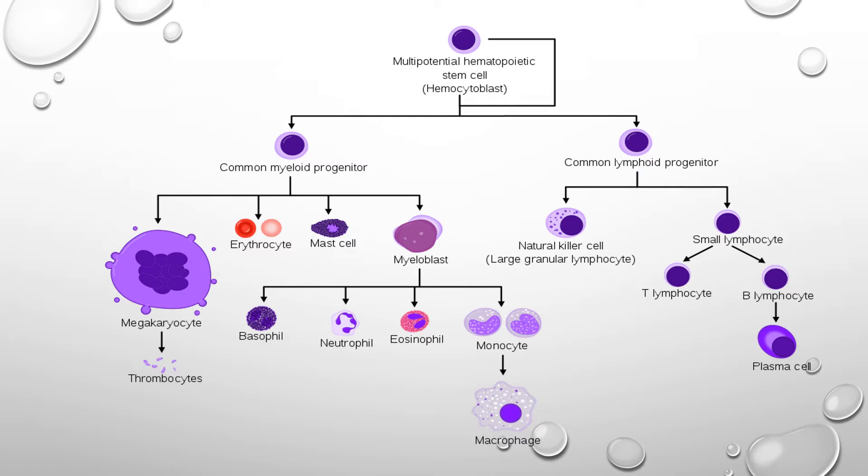Basophil's main function is to react to various foreign substances. They contain granules which release histamine and heparin. Neutrophils are granulocytes and active phagocytes. Eosinophils are also granulocytic cells and phagocytic cells. Monocytes are agranulocytes, which are monocytic cells.